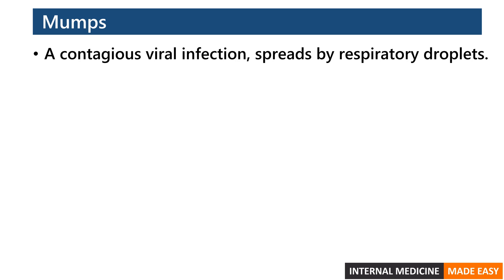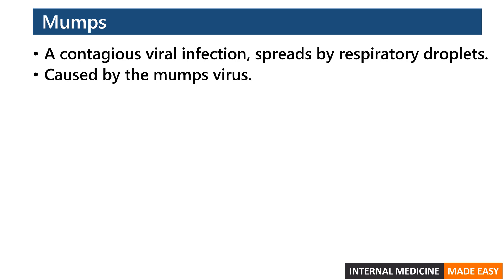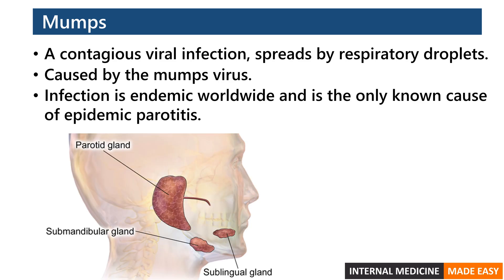Mumps is a contagious viral infection, which means it spreads from person to person through respiratory droplets. It is a systemic illness and affects a number of organs and tissues. It is caused by the mumps virus, which is a single-stranded RNA paramyxovirus. Mumps is endemic worldwide, with epidemic outbreaks occurring approximately every five years in unvaccinated regions.